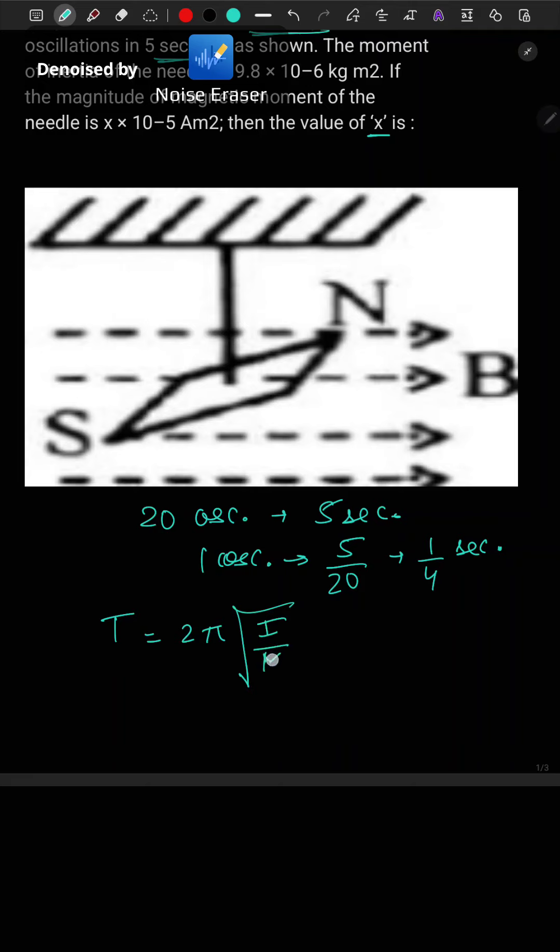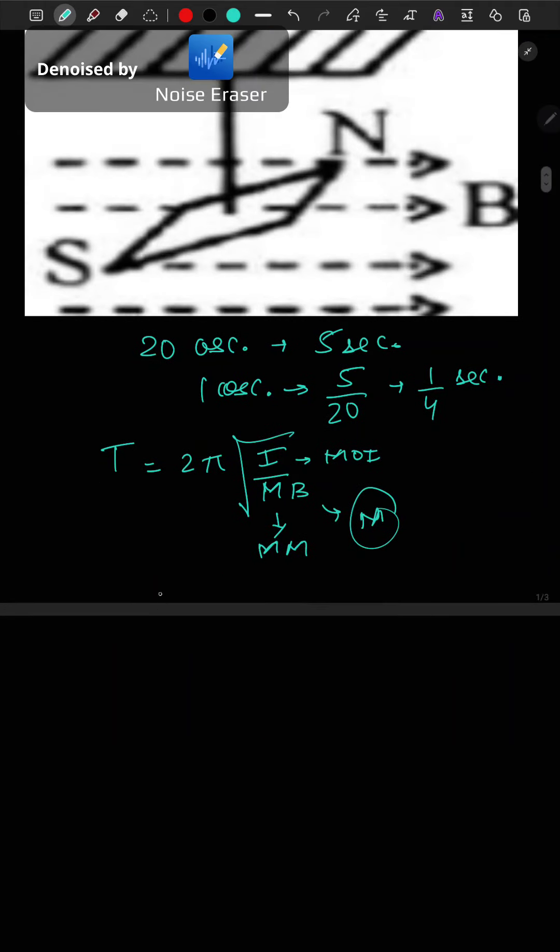Here I stands for moment of inertia, M stands for magnetic moment, and B stands for magnetic field. Now let us put the values here for time period.